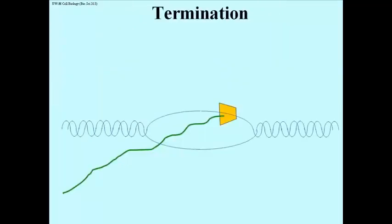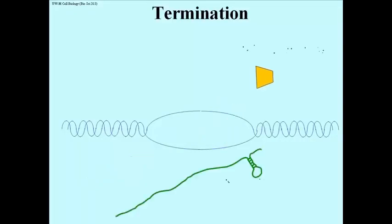Termination of transcription is in response to a signal in the DNA that marks the end of a gene. In this example, the signal is itself transcribed, but we know that the transcript forms this so-called hairpin loop near its three prime end. The hairpin loop destabilizes the association of the transcript with the polymerase and the DNA strand, and they come apart.